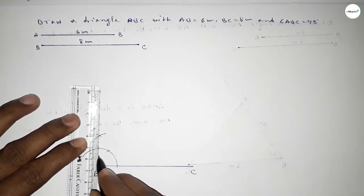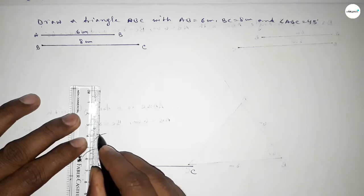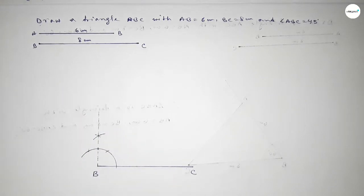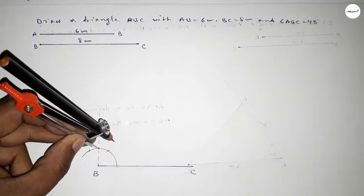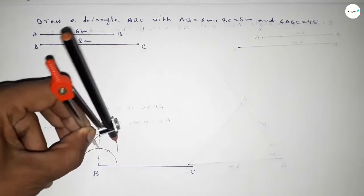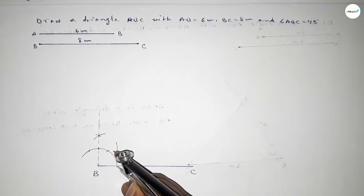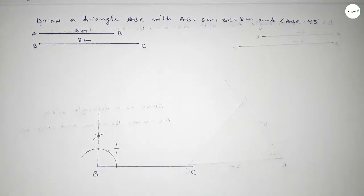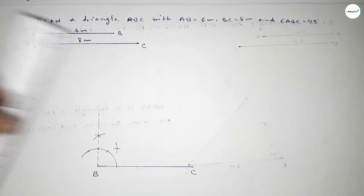Now joining this to get a 90 degree angle. Then we have to bisect this angle to get 45 degrees — taking same length, putting the compass and drawing an arc, again with same length putting the compass and cutting here, so both curves intersect at a point.